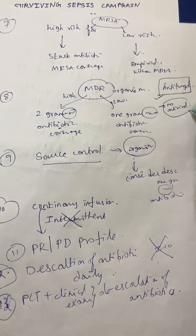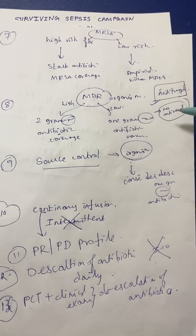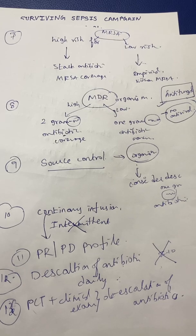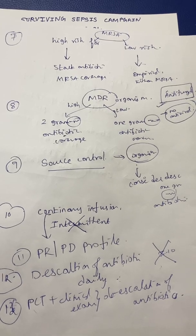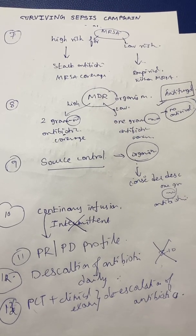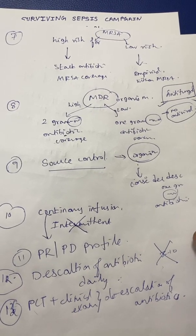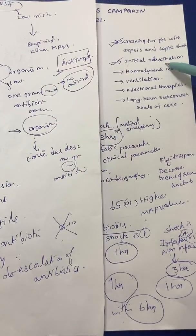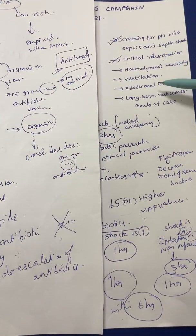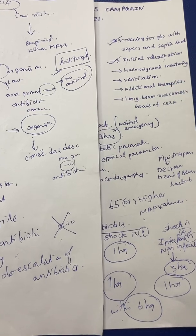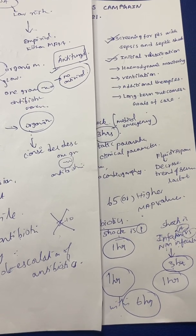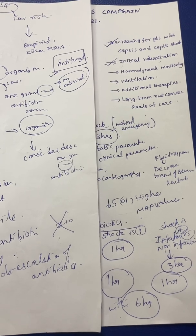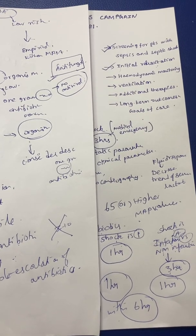These are some of the most important features seen in screening patients and initial resuscitation in the Surviving Sepsis 2021 guidelines. In other videos, we will cover hemodynamic monitoring and ventilation. If you like the videos, please give a thumbs up and subscribe to the channel.